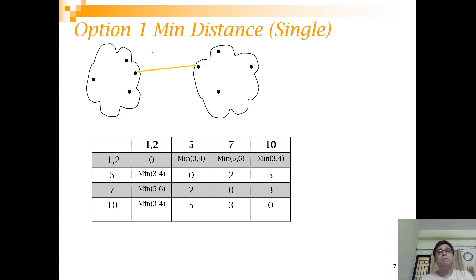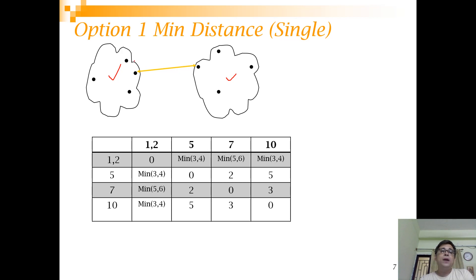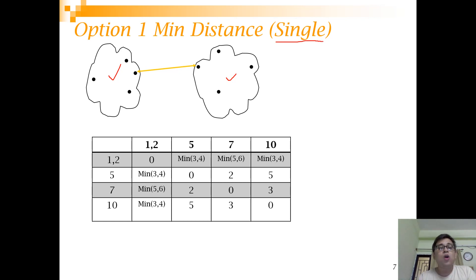One option is called min distance, also known as single linkage. Here, given two clusters, you find which two points are closest to each other such that one point is from one cluster and the other is from the other cluster. For example, the distance of 1 with 5 is 4, and 2 with 5 is 3, so you take the minimum — which is 3. It's called single linkage because we consider only a single pair of points when calculating the inter-cluster distance.